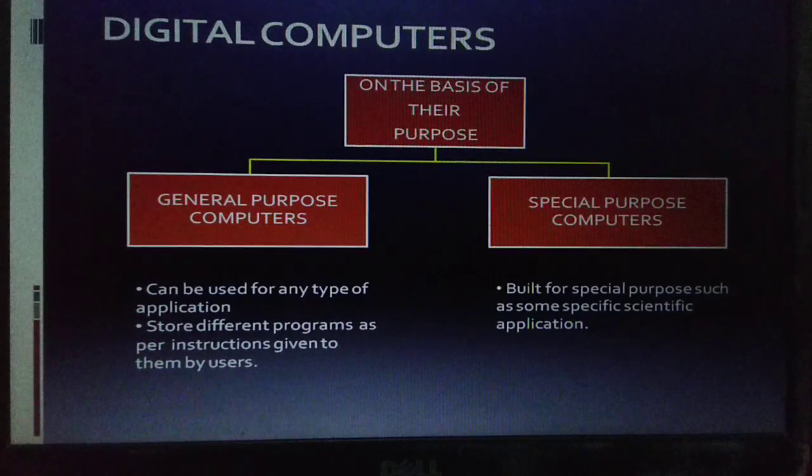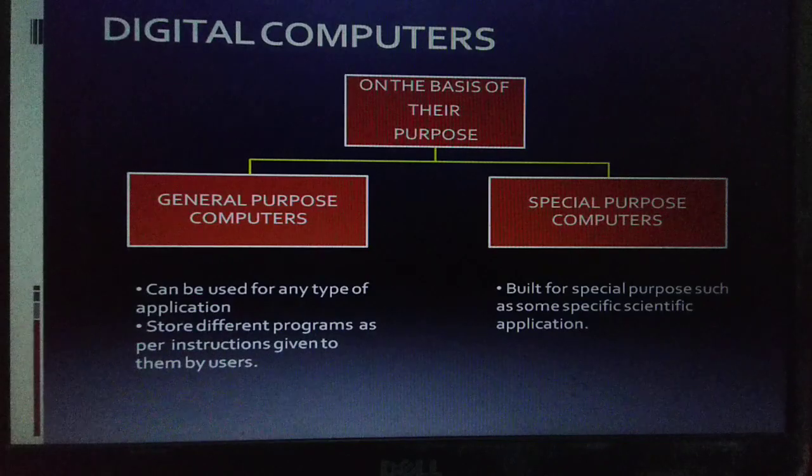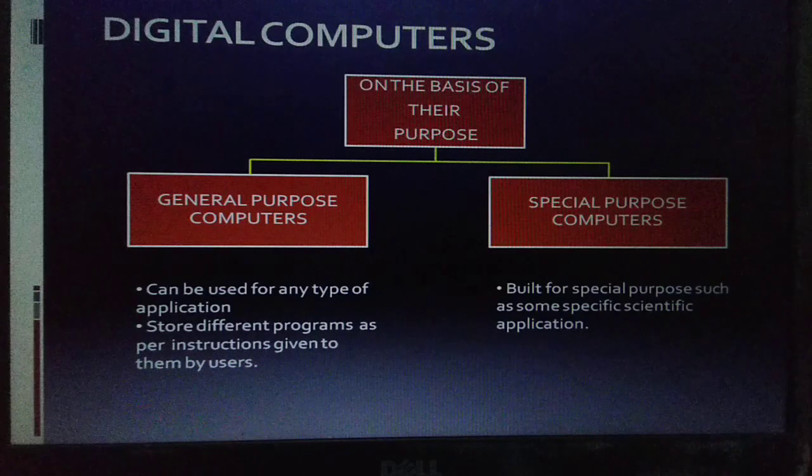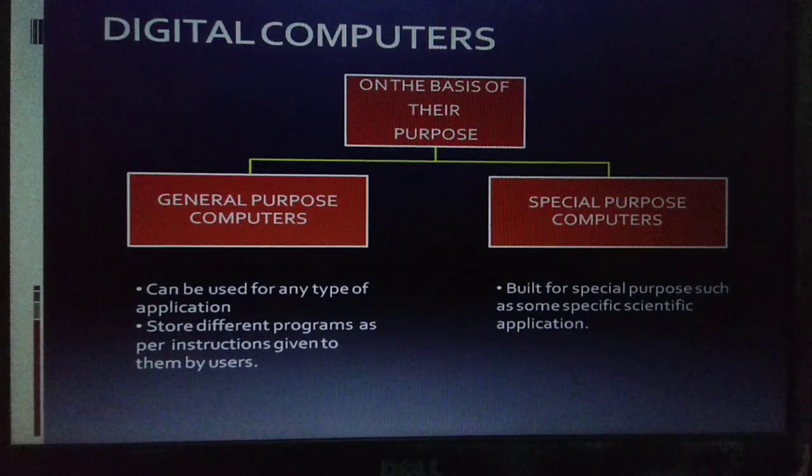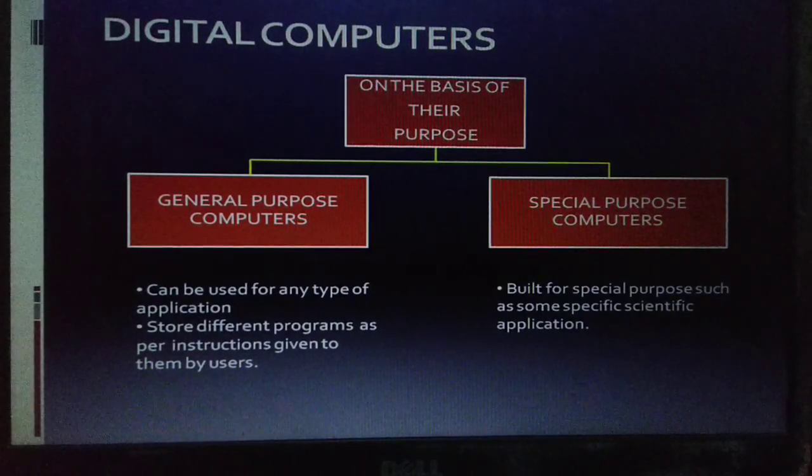General purpose computers can be used for any type of application. They can store different programs and process data as per instructions given to them by the users. On the other hand, special purpose computers are computers which are built for a special purpose such as some specific scientific application. Now, most of the computers we see today are general purpose computers.